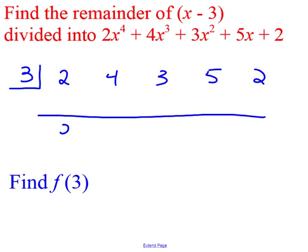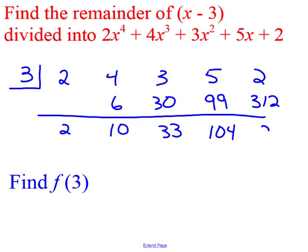I'm going to bring down my 2, multiply by 3 to get 6, add, multiply by 3 to get 30, add, multiply by 3, add, multiply by 3. That's 300 plus 12 is 312, and I end up with a remainder of 314.